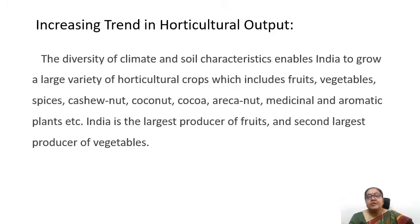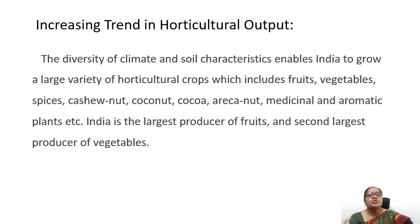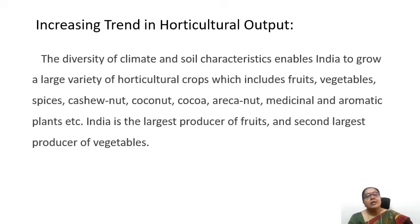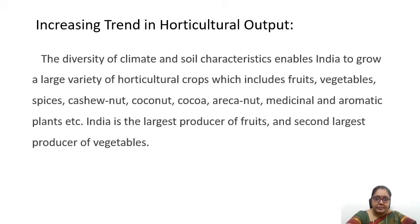India grows fruits, vegetables, spices, cashew nut, cocoa, coconut, areca nut, medicinal plants, and aromatic plants. There is a huge demand for these products, and when there is demand, the farmer is positively motivated to produce and sell in the market. India is one of the largest producers of fruits and the second largest producer of vegetables as well.